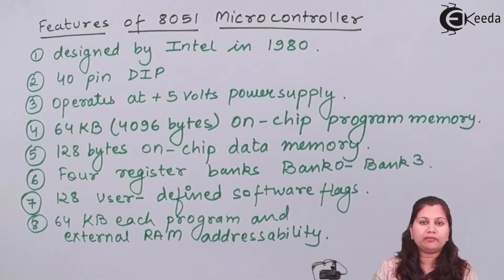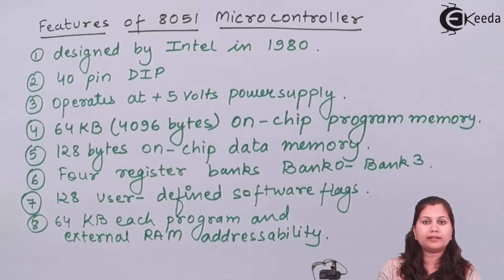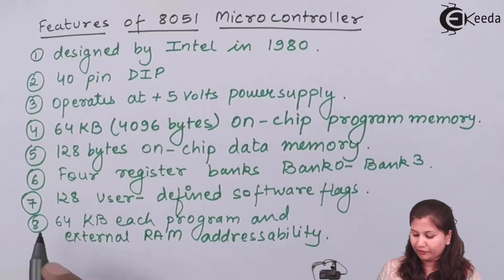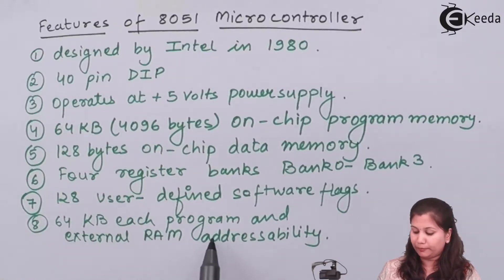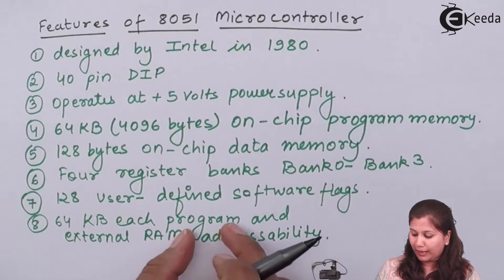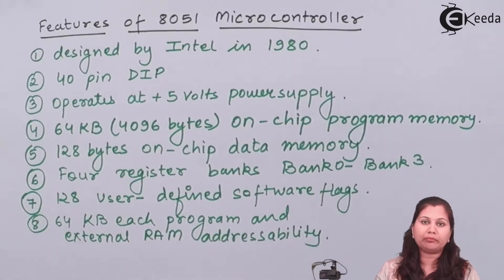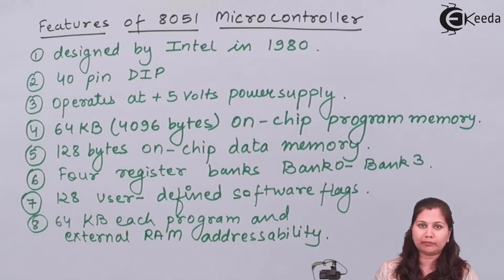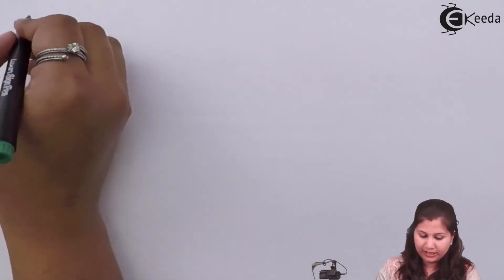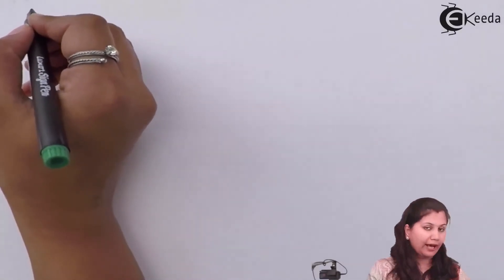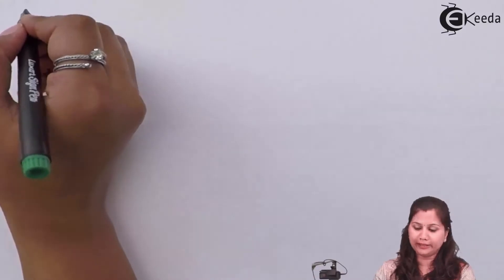For memory, we have various addresses. Whenever we want to address or use the memory, we address the memory locations. In 8051, we have 64 kilobytes each of program memory and external RAM addressability. This addressability can be either bit addressability or byte addressability.